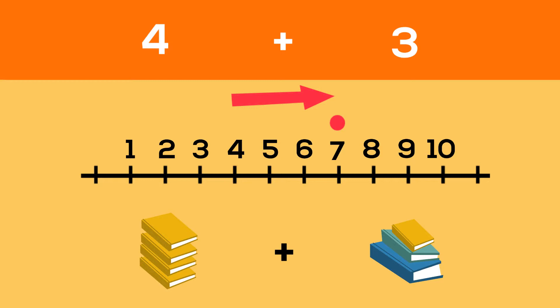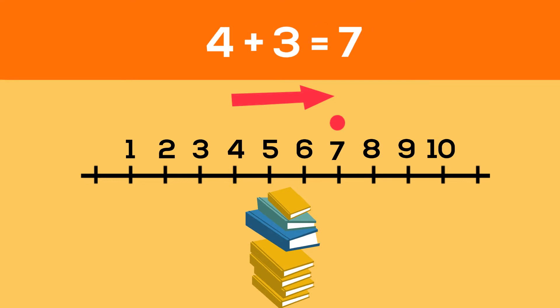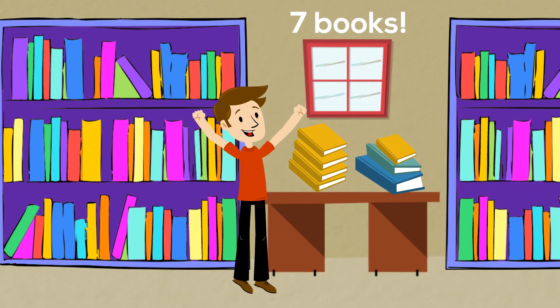Good job! Notice that we stop at seven, so that means Jake has a total of seven books now. Again, four books plus three books equals seven books.